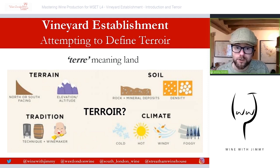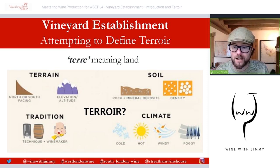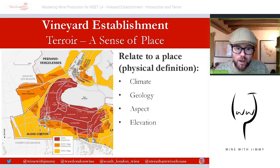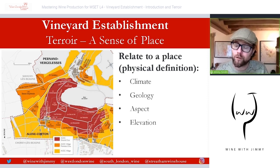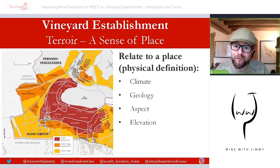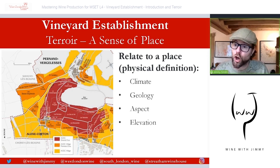Terroir is really one word in French and an essay in English — it's quite difficult to put pen to paper when describing it. First of all, terroir has a sense of place: it relates to a place and gives it a physical definition. A wine can show characteristics that relate to specific and particular places, such as climate, soil, aspect, elevation, and altitude.